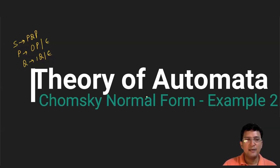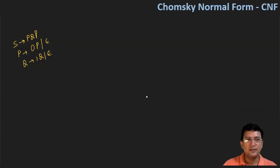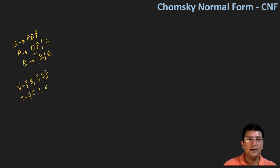Hello everyone, let's take one more example for the conversion of the given CFG to Chomsky Normal Form. We identify that we have variable symbols: S, P, Q — three symbols. And the terminal symbols we have are A, 0, 1, and epsilon.